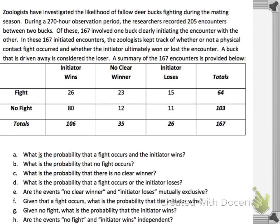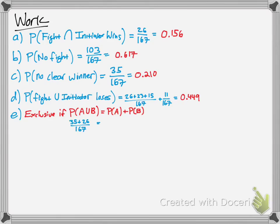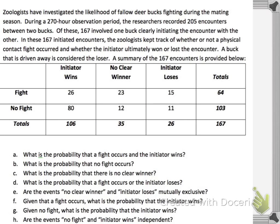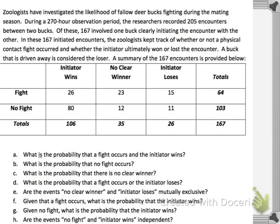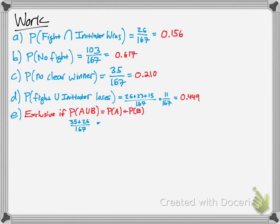Are the events 'no clear winner' and 'initiator loses' mutually exclusive? To test that, the probability of A union B must equal probability of A plus probability of B. The probability of no clear winner is 35 over 167, and the probability of initiator loses is 26 over 167. Since the combined probabilities are equal — they are, in fact, mutually exclusive.